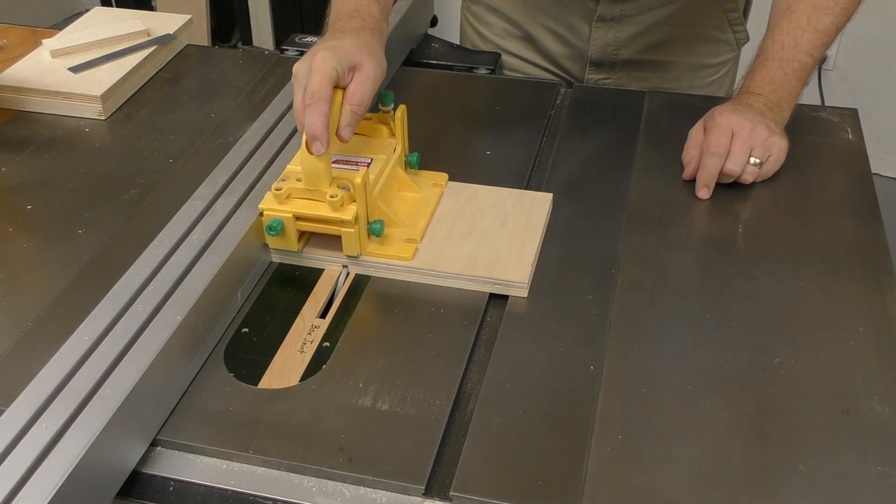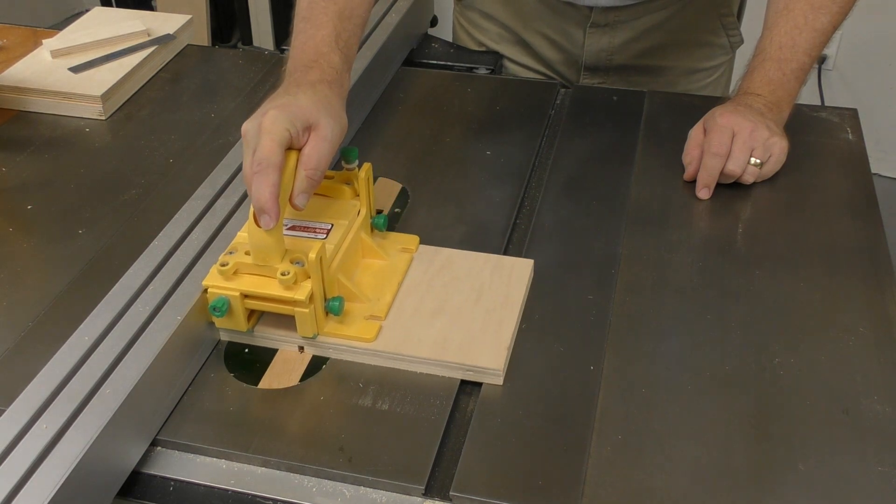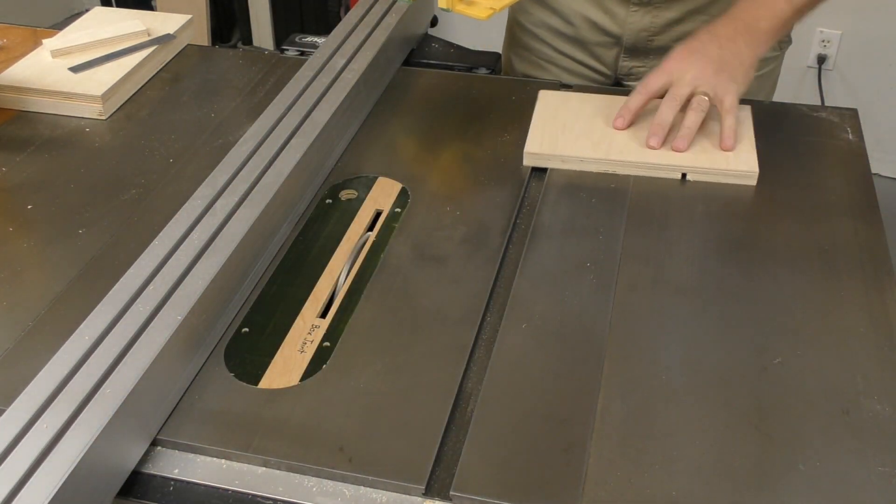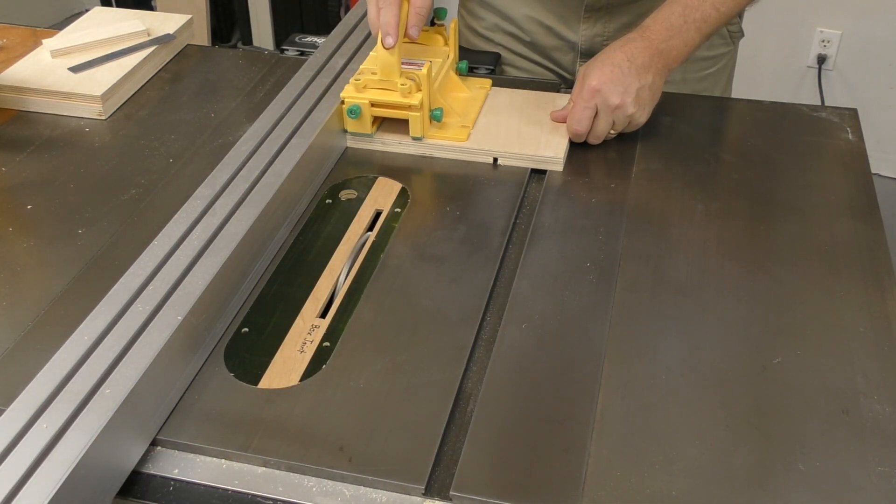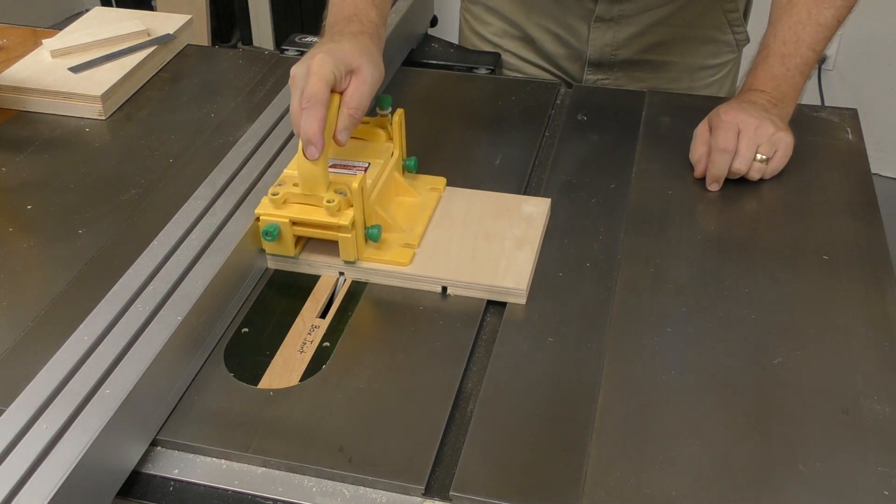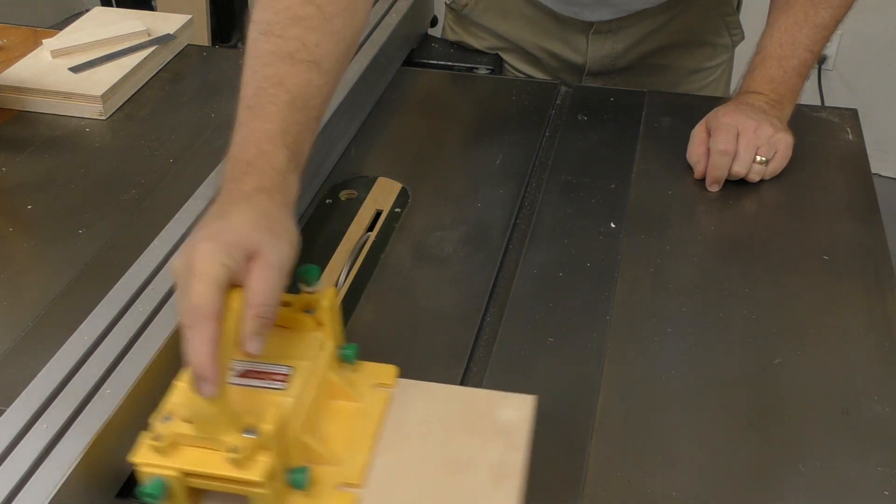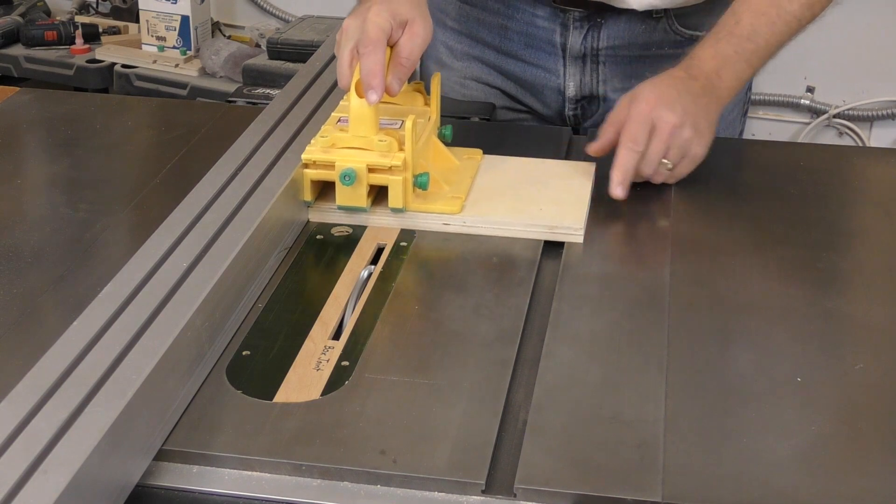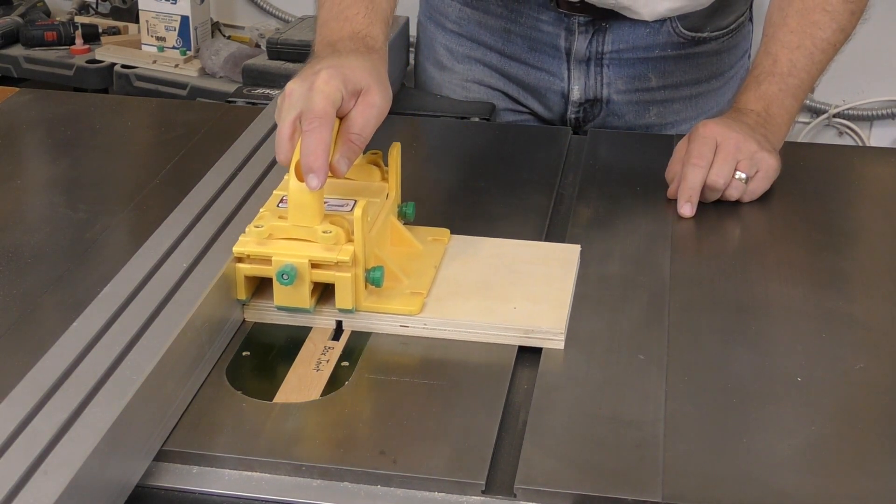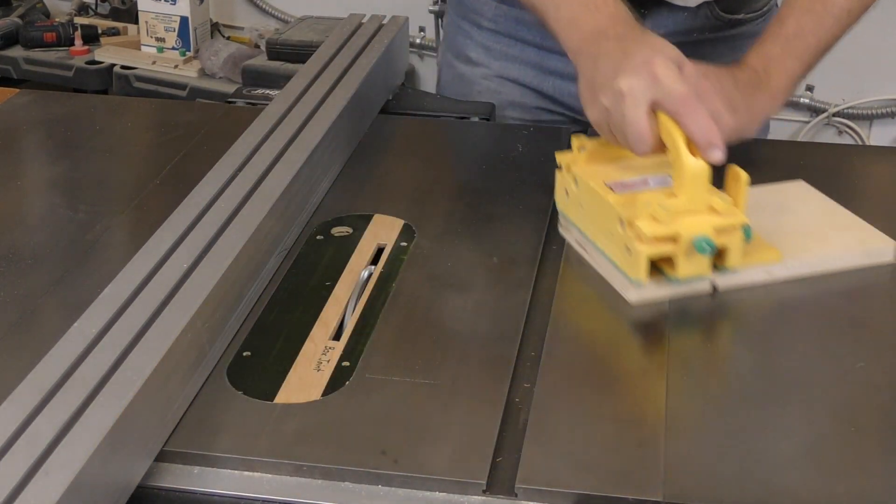Two grooves are cut into the sled base across the 6-inch dimension. They're a quarter inch wide, 5-16ths deep, and centered 3 inches in from each end. Without changing the setup, the slide gets a single groove at 3 inches.